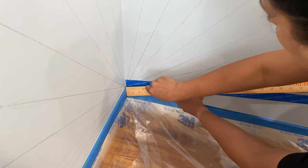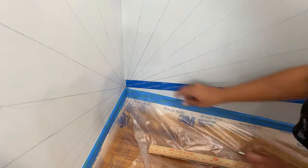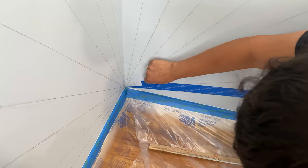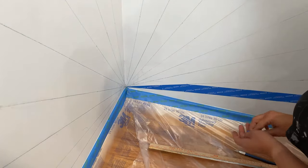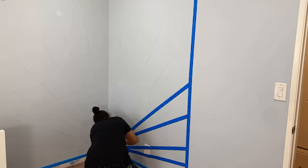Now towards the corner the pattern becomes narrower so I used an exacto knife to cut off the tape to follow along the pattern. And I just repeated it for the entire pattern on the wall.